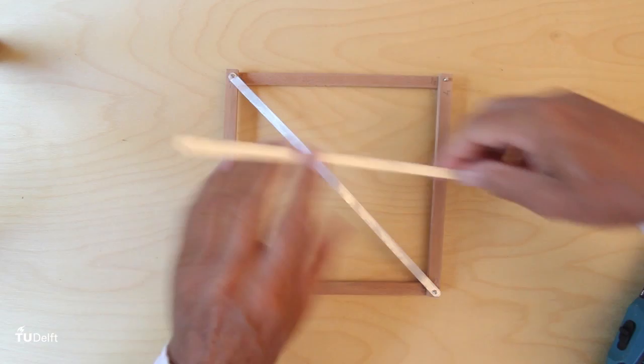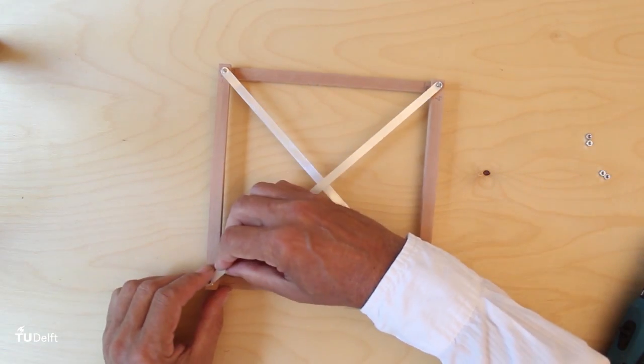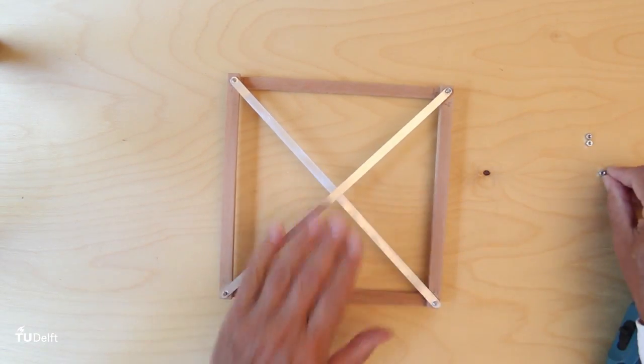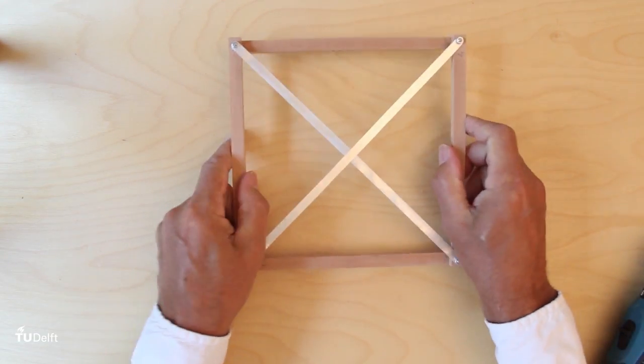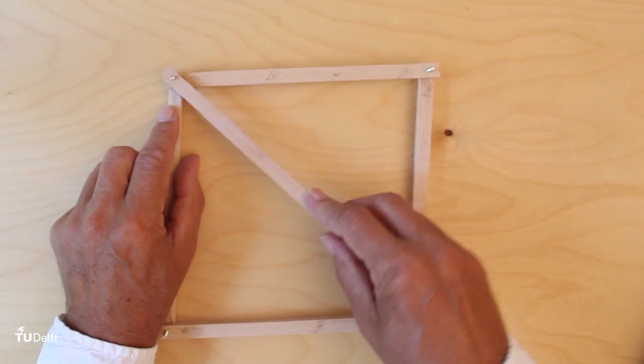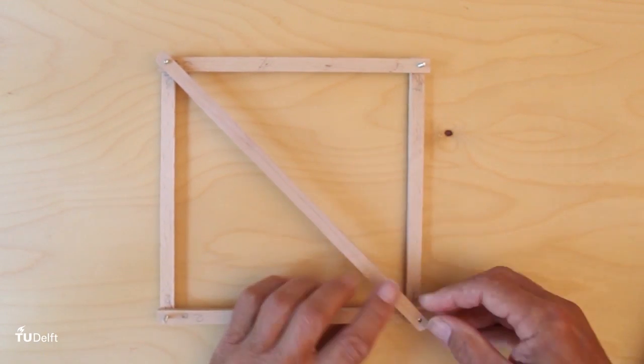So to give this frame a fixed form, we can do two things: either add another tension element in this way, or add a bracing element that can withstand compression forces. Such a brace needs to be much thicker than a tension element, way more than the two tension elements that we need in this option.